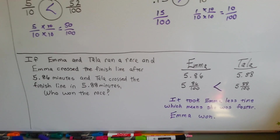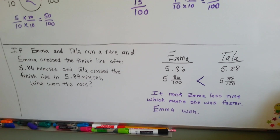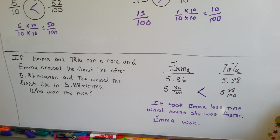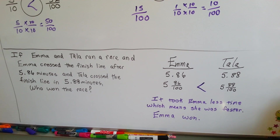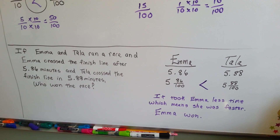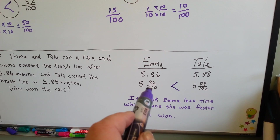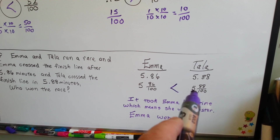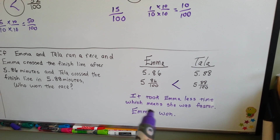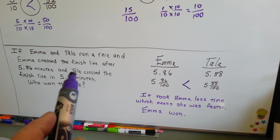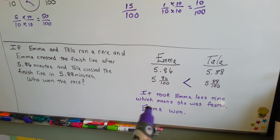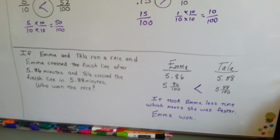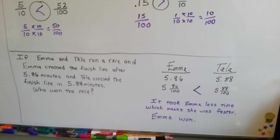This is our last question. If Emma and Tala ran a race, and Emma crossed the finish line after five and eighty-six one-hundredths minutes, and Tala crossed the finish line after five and eighty-eight one-hundredths minutes — who won the race? Tala's amount is more; eighty-eight is bigger than eighty-six. But did that mean she won? No — it's a race. It's whoever does it the quickest in the smallest amount of time. It took Emma less time, which means she ran faster. Even though Emma's amount was less, she won the race because she did it faster.